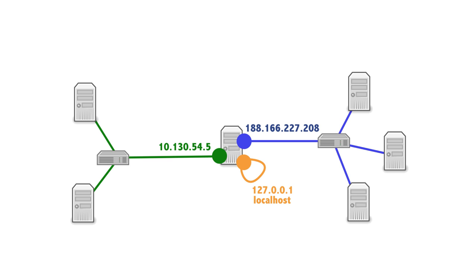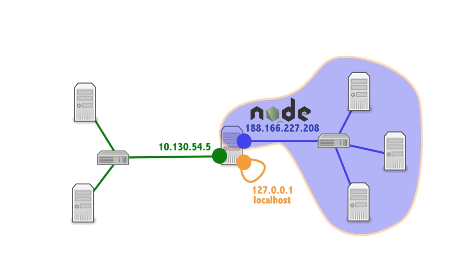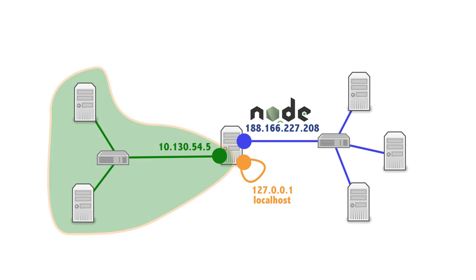Now comes the really important and interesting part. Whenever you have a networking program — it might be your Node.js application, a database server, or Nginx — anything that listens to the network is usually configured to listen on a certain networking interface. What that means is that this program will only be able to accept connections from that network. For example, if your application is bound to 188.166.227.208, which is the blue network, then all computers on the blue network will have no problem connecting to your app, while computers on the green network will not be able to establish a connection — even though they have a link to your host and are able to send packets.